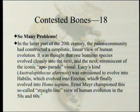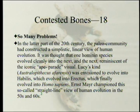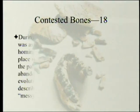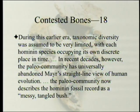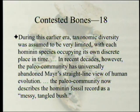It was thought that one hominin species evolved cleanly into the next, reminiscent of the iconic parade visual. They thought everything worked according to plan — Lucy's kind, Australopithecus afarensis, was envisioned to evolve into Habilis, which evolved into Erectus, which finally evolved into Homo sapiens. Ernst Mayr championed this so-called straight-line view of human evolution in the 50s and 60s. During this earlier era, taxonomic diversity was assumed to be very limited, with each hominin species occupying its own discrete place in time. In recent decades, however, the paleo community has universally abandoned Mayr's straight-line view of human evolution.